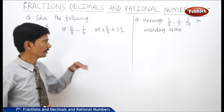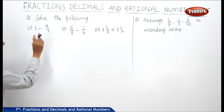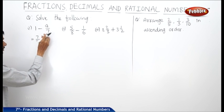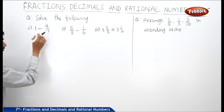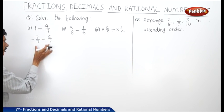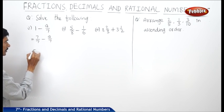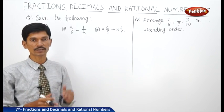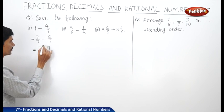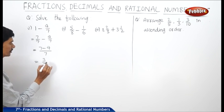Let us solve: one minus four by seven. One can be written as seven by seven since the denominator of the second fraction is seven. So it becomes seven by seven minus four by seven. These two fractions are like fractions because they have the same denominator. When denominators are equal we subtract the numerators: seven minus four is three, so the answer is three by seven, which is a proper fraction.